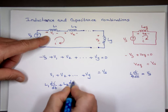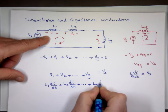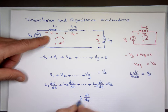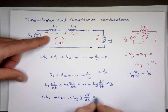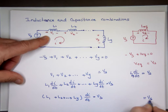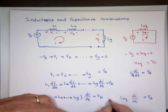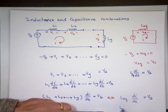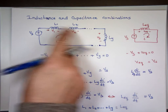Plus L2·di/dt, plus LY·di/dt. If I factor di/dt out, what's left is L1 plus L2 plus LN. And you want that to equal L_eq·di/dt. I'm saying this has to equal this — the voltage has to be the same, VS, and the current has to be the same. The only way these two are equal is if L equivalent equals L1 plus L2 plus LN. So it's just like resistors. We treat inductors like resistors. When they're connected in series, we add them all.